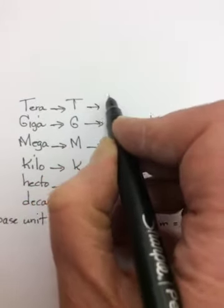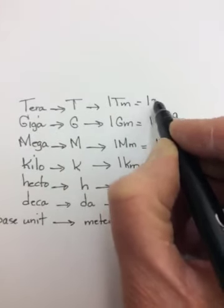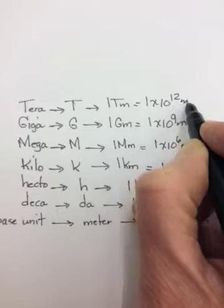Capital T. And 1 terameter, in this case, is equal to 1 times 10 to the 12th meters.